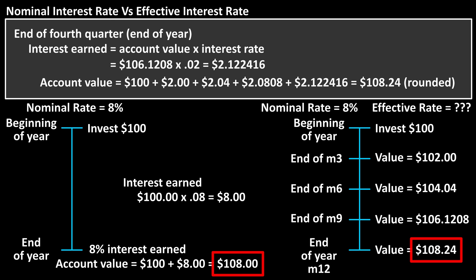So if we compare example 1 and example 2, the account that compounds more has more money in it, meaning the actual rate of interest is larger in example 2. In both examples, the stated rate or nominal rate of interest was 8%.